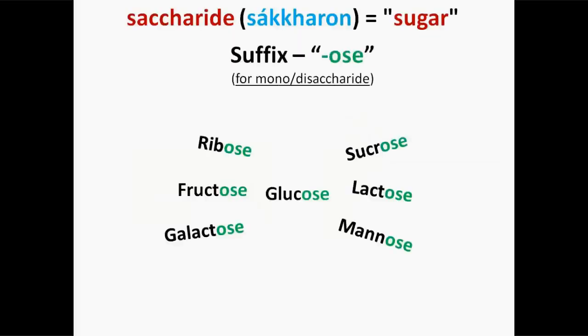The word saccharide comes from the Greek word sakaron, meaning sugar. While the scientific nomenclature of carbohydrates is complex, the names of the monosaccharides and disaccharides very often end with the suffix -ose.